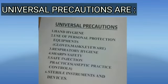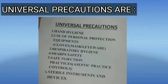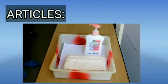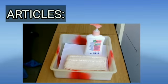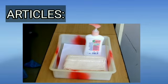Universal precautions include hand hygiene, use of personal protective equipment such as gloves, mask, eyewear, respiratory hygiene, sharp safety, safe injection practice, and use of sterile instruments and devices. These are the articles used for hand washing.